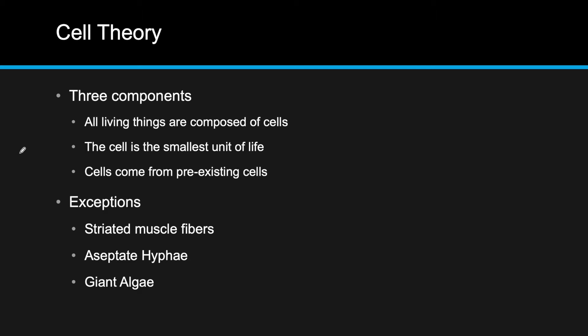Cell theory is composed of three different parts. It states that all living things are composed of cells, the cells are the smallest unit of life, and cells come from pre-existing cells. These three ideas arose through the creation of the microscope, which led us to the discovery of cells.